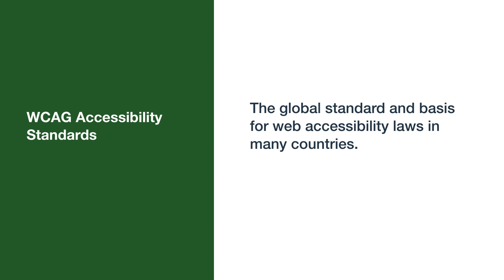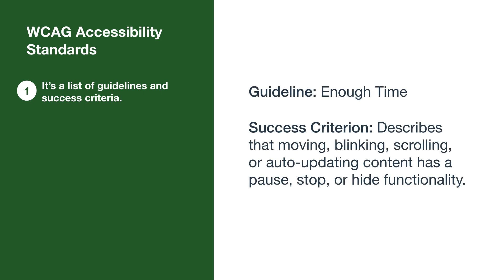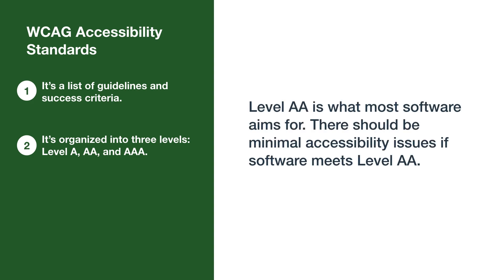The global standard and basis for web accessibility laws in many countries are the WCAG accessibility standards. Here's what you need to know about WCAG: it is a list of guidelines and success criteria. For example, a guideline is 'enough time.' One success criterion under this guideline describes that moving, blinking, scrolling, or auto-updating content has a pause, stop, or hide functionality. It's organized into three levels — Level A, AA, and AAA. Level AA means they meet success criteria for Level A and AA, and is what most software aims for. There should be minimal accessibility issues if software meets Level AA.